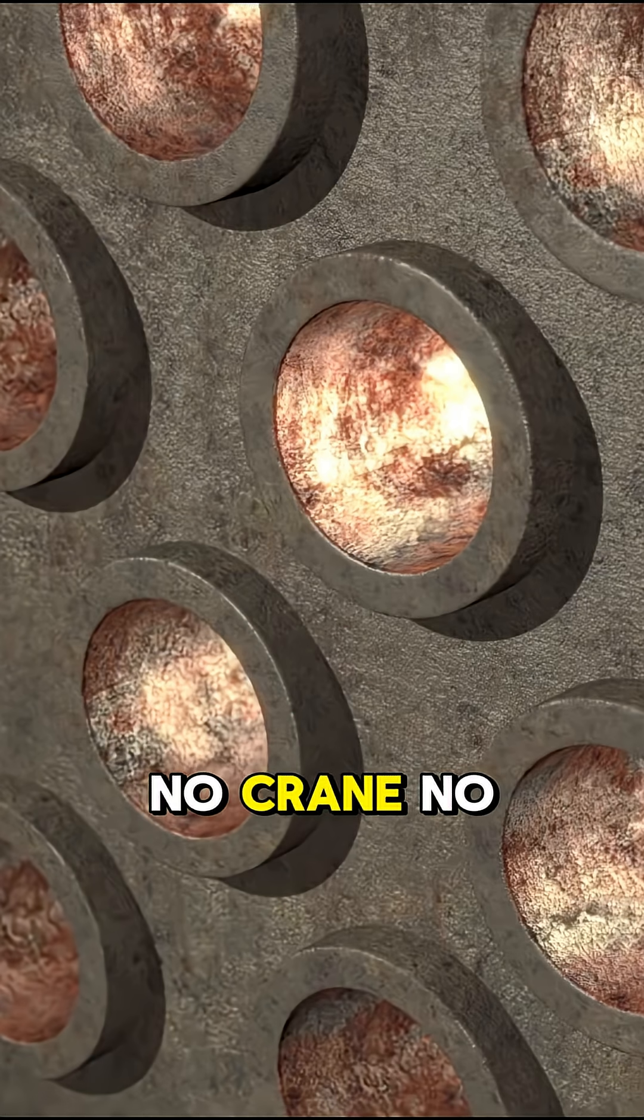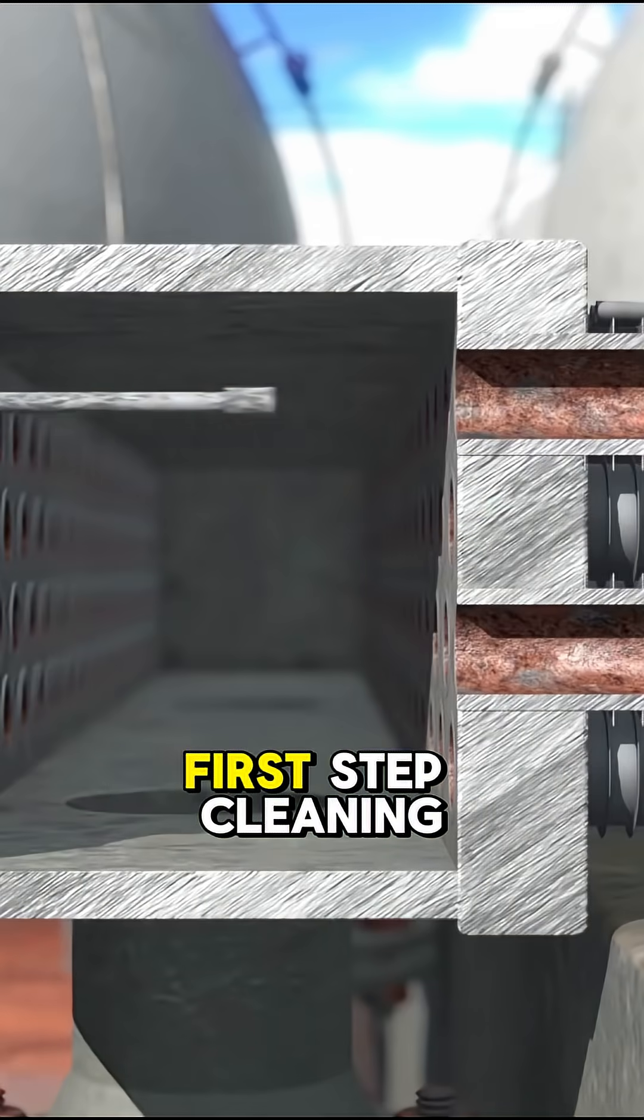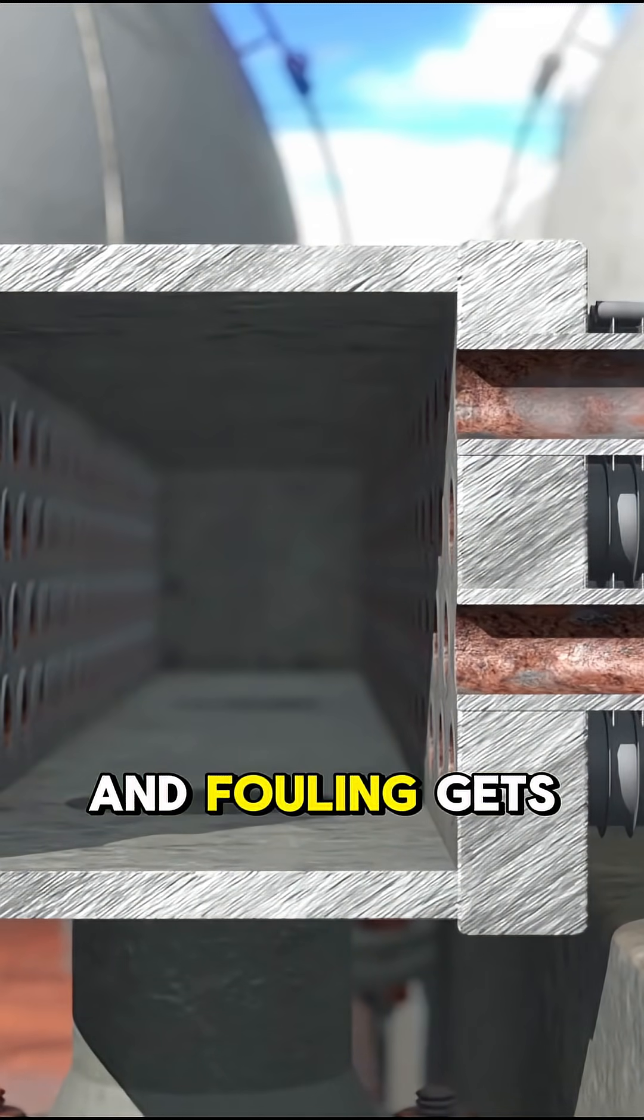No crane, no teardown, no replacement. Just precision fieldwork. First step: cleaning. All scale, debris, and fouling gets blasted out down to near white metal. The goal: maximum contact between the new liner and old tube wall.